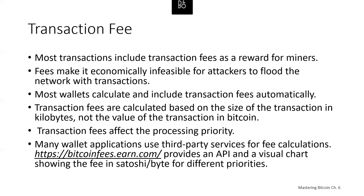Over time, the way transaction fees are calculated has evolved. At first, in the early days, fees were fixed and constant. Gradually the fee structure relaxed and was influenced by market forces based on network capacity and transaction volume. Since at least 2016, capacity limits in Bitcoin have created competition between transactions, resulting in higher fees and effectively making free transactions a thing of the past. Zero fee or very low fee transactions rarely get mined and sometimes will not even be sent across the network.